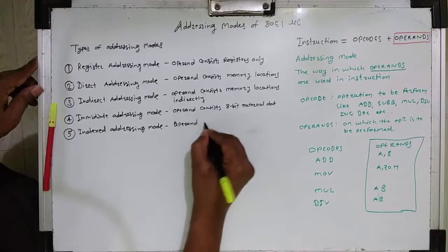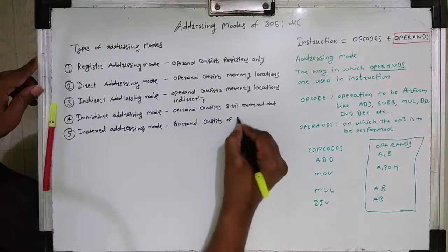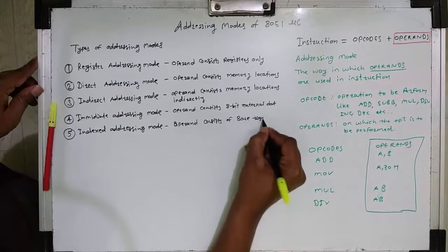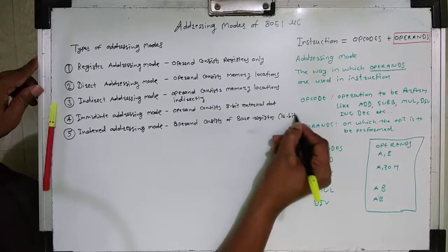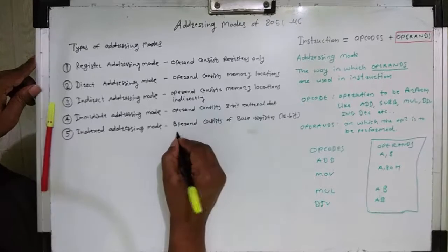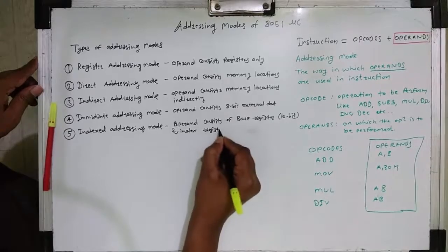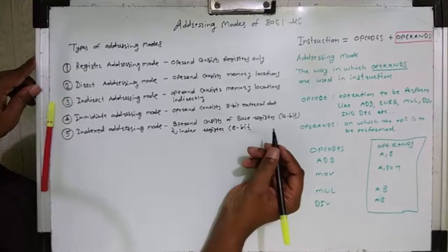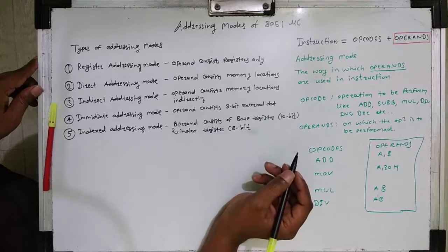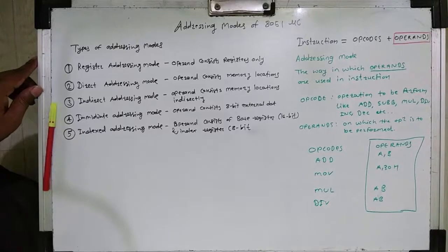In base plus index register indirect addressing mode, or index addressing mode, the operand consists of a base register and an index register. The base register is 16 bits wide, and the index register is 8 bits wide. 16-bit registers include DPTR and the program counter.